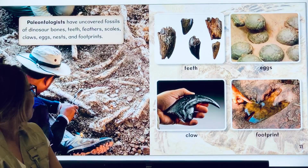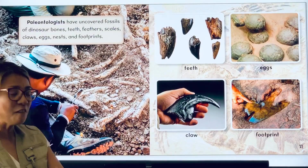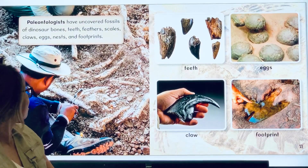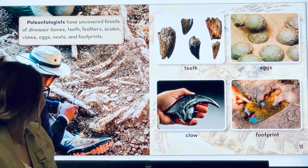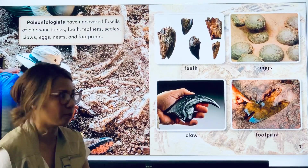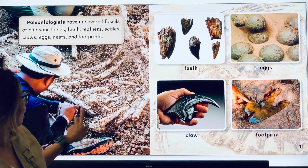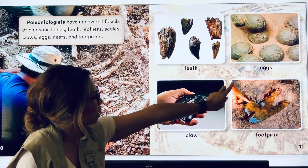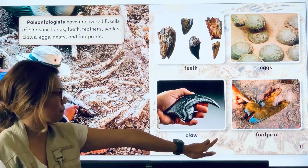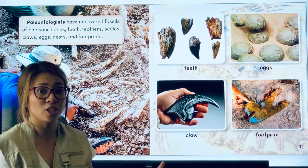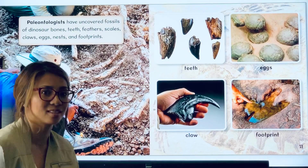Paleontologists have uncovered fossils of dinosaur bones, teeth, feathers, scales, claws, eggs, nests, and footprints. So this paleontologist has discovered some teeth, eggs, claws, and footprints. This information will help them figure out which dinosaur he is looking at.